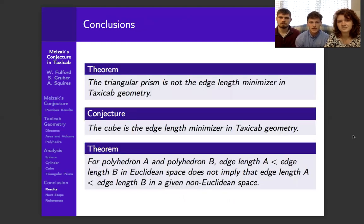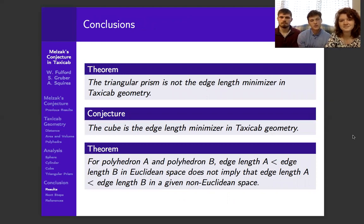And from this, we can conclude that a triangular prism is no longer the edge length minimizer in taxicab geometry, which leads us to the conjecture that the cube will be. And we can prove that for a certain shape, angles that are operating in a certain way do not have to uphold the same way in a translation across geometries.